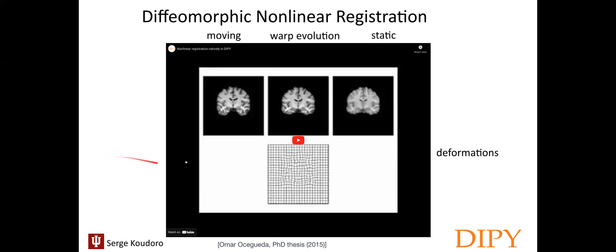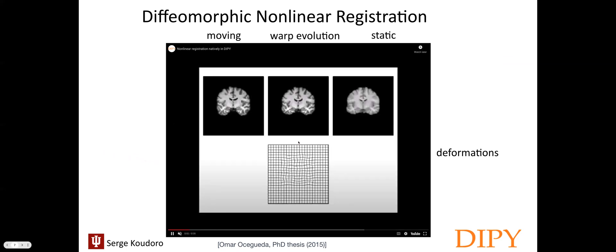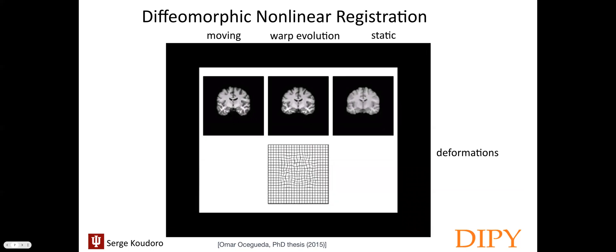Now I will start a quick video that we created with the Dipy implementation to show how the algorithm works. On the right you have the static image, and on the left you have the moving image. You can see that after many iterations, we can observe some local deformation on each region of the brain. When the optimizer succeeds in minimizing the similarity metric, it stops, and we have our final diffeomorphic map.